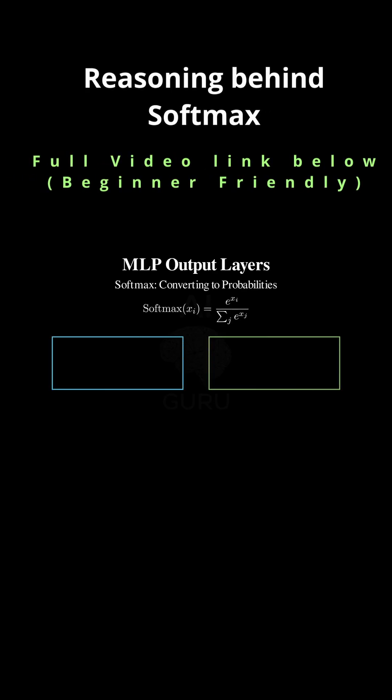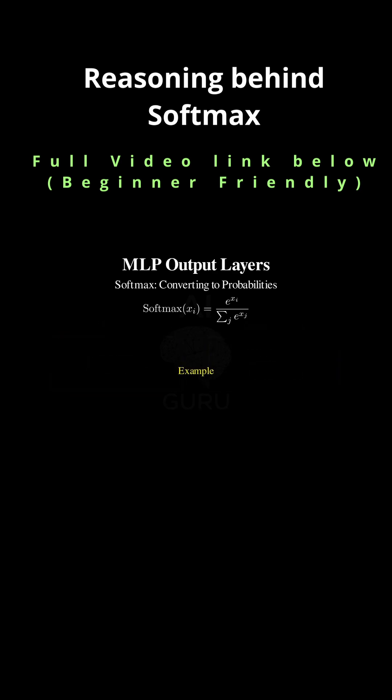This is so important for turning raw output scores into something meaningful — it turns them into probabilities. Softmax is defined mathematically by taking e to the power of the output score for neuron i, so e to the xi, and dividing it by the sum of e to the power of all the output scores.